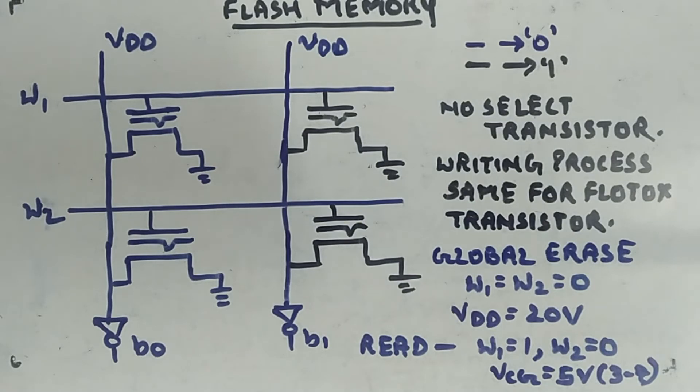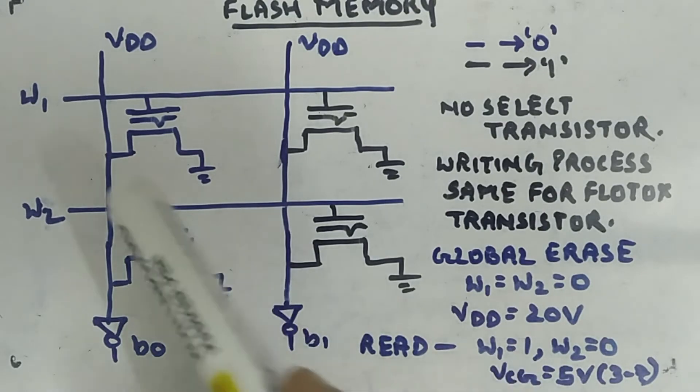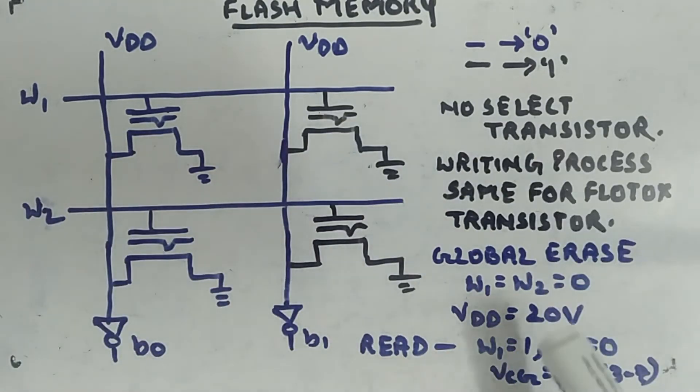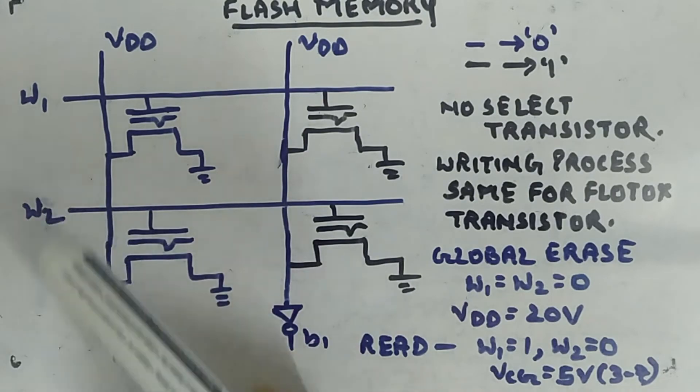W1, W2 - I already told you how to do the reading process. Reading is also the same: you apply a voltage between 3 to 7 volts, or in our case between two threshold voltages at the gate terminal of a specific row. So W1 I'm keeping at logic high, W2 at the same time I'm keeping logic low.